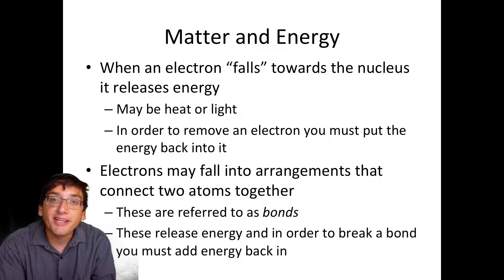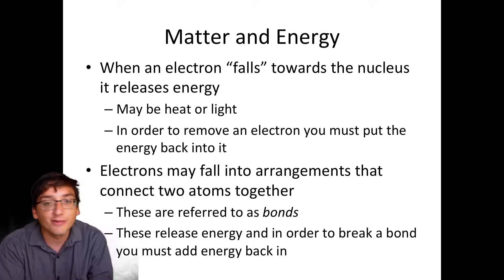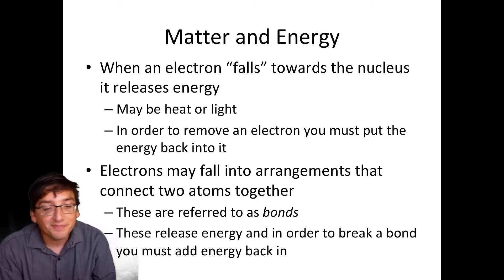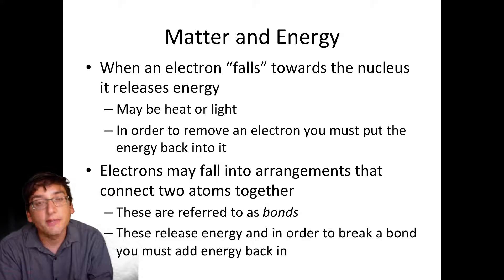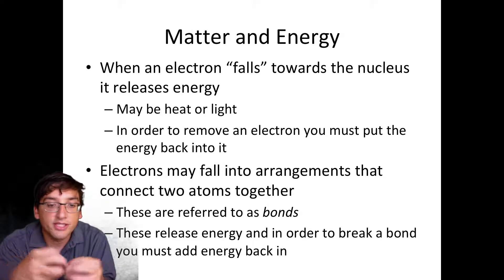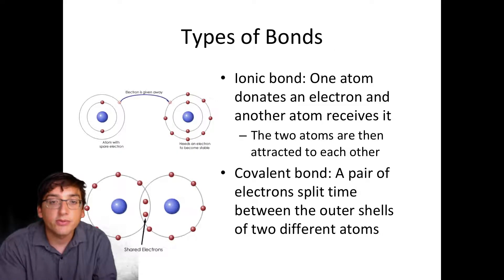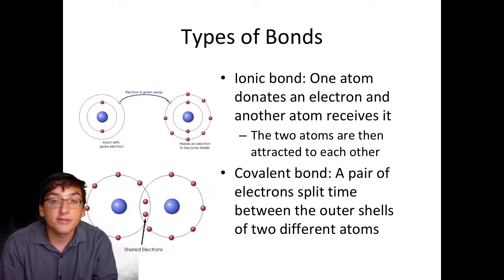We also break bonds when we eat food — partially breaking the bonds between atoms in our food, not completely. That also requires energy, which is part of why digesting food takes energy. There are two types of bonds we're going to be covering: the ionic bond and the covalent bond. There's also something called a hydrogen bond, but it's not really a bond — we'll leave that aside for a moment.